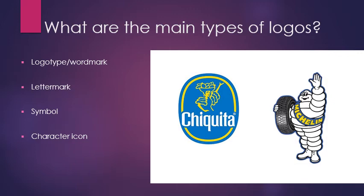The fourth type is a character icon — the Michelin Man, the Chiquita Banana lady, the Aflac duck. These are characters, cartoons, or illustrations developed to embody the personality of a brand. Character icons aren't really in vogue anymore, but they are a valid type of logo and sometimes used in addition to a more corporate mark.